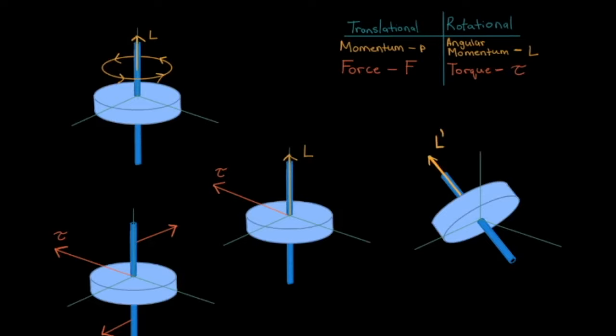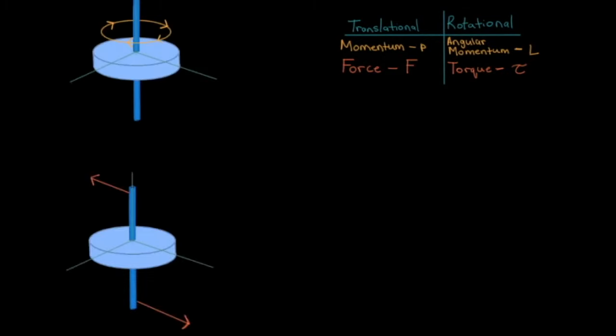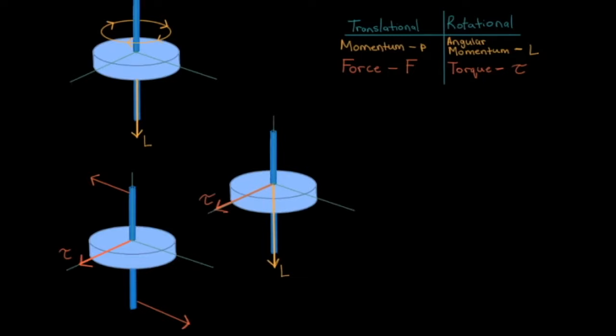And one more example for good measure. The wheel is spinning this way and then gets torqued in this direction — which way does it precess? Step one: find the angular momentum by curling four fingers in the direction of the spin — your thumb should be pointing downward, so the angular momentum is downward. Step two: use the right hand rule again to find the torque — in this case, it's pointing in this direction. Step three: the angular momentum follows the torque, so the wheel will tilt in this direction.